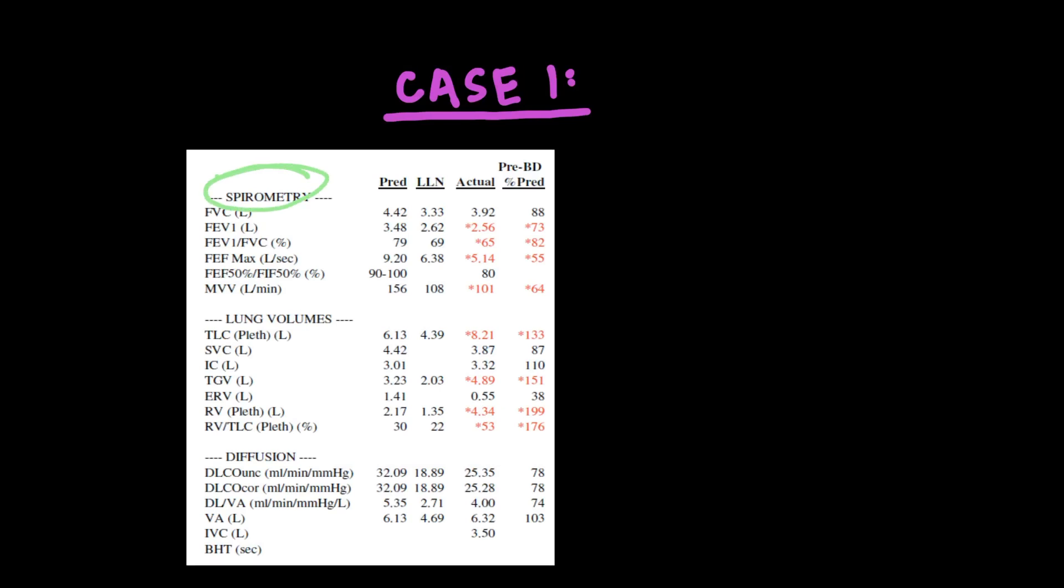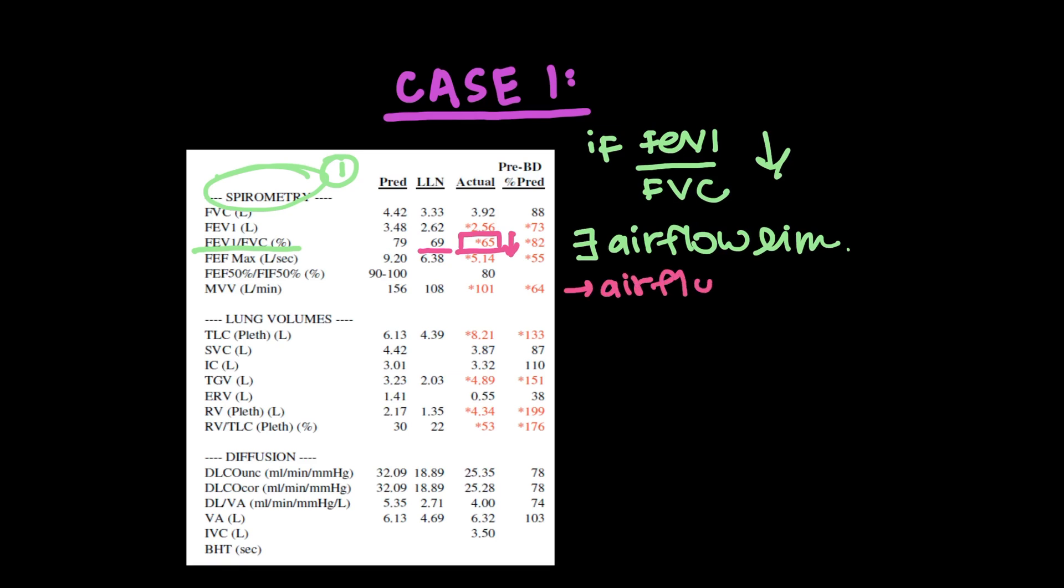Alright, so here's how PFTs look. The first thing I want to look at is spirometry, remember? And so what we're going to look at here is the FEV1 to FVC ratio. Remember, if the FEV1 to FVC ratio is low, then that is indicative of airflow limitation. So this patient, when you look at the lower limit of normal, it's 69, and when you look at his number, it's 65. So that is lower, and so therefore you can say that this patient does indeed have an airflow limitation.